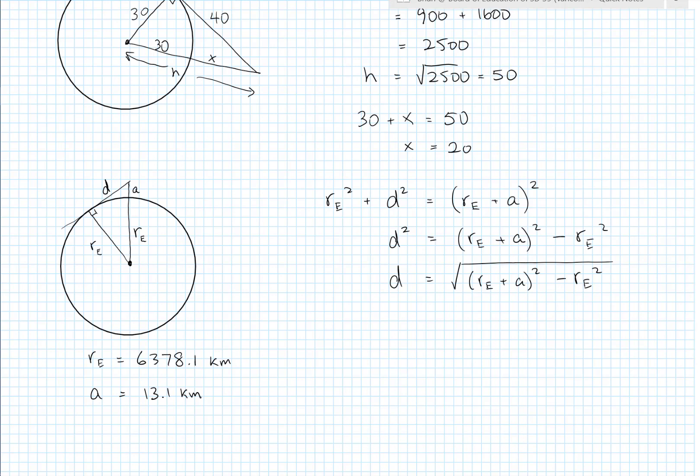So let's take a look. Let's plug all this in and see what we get for D. So the distance equal to 6,378.1 plus 13.1 squared minus 6,378.1 squared. And when you plug that into a calculator, you get approximately 409 kilometers.